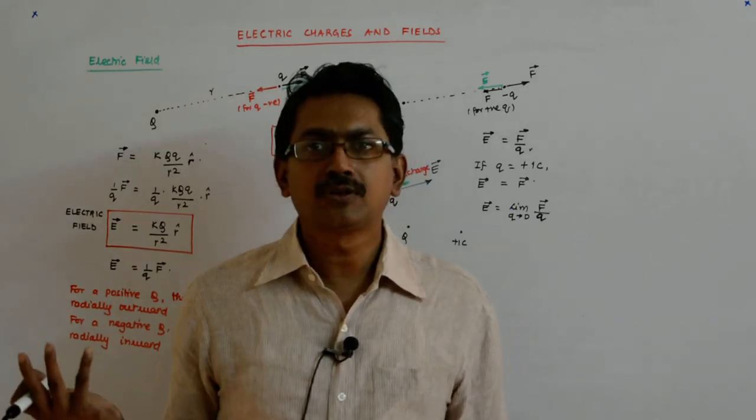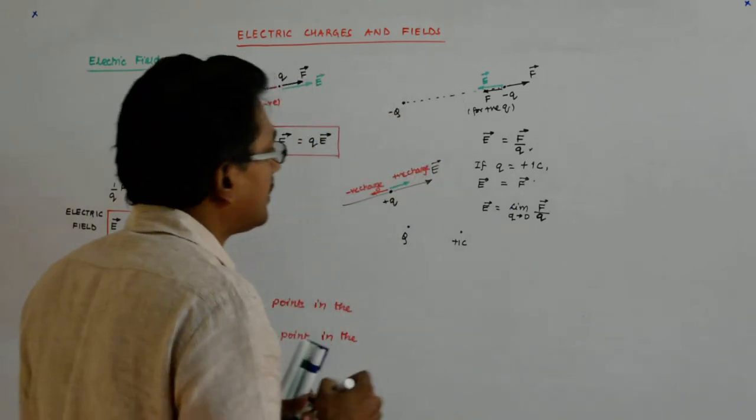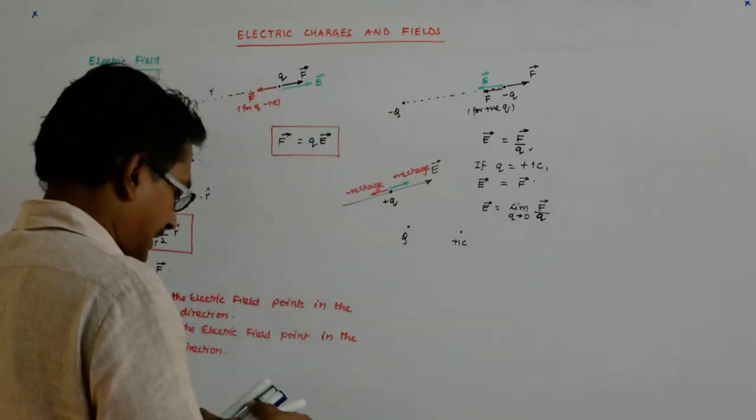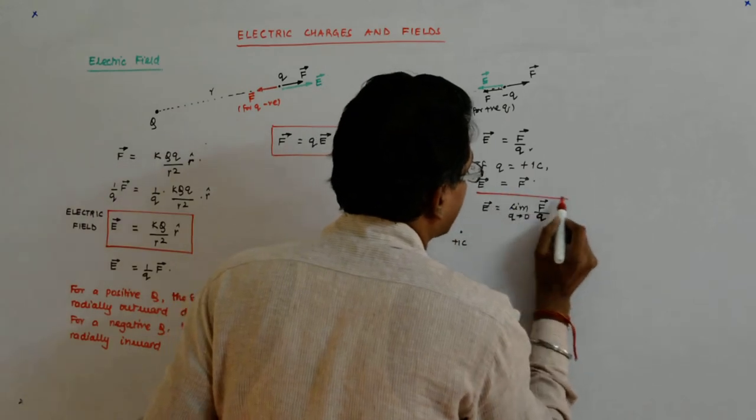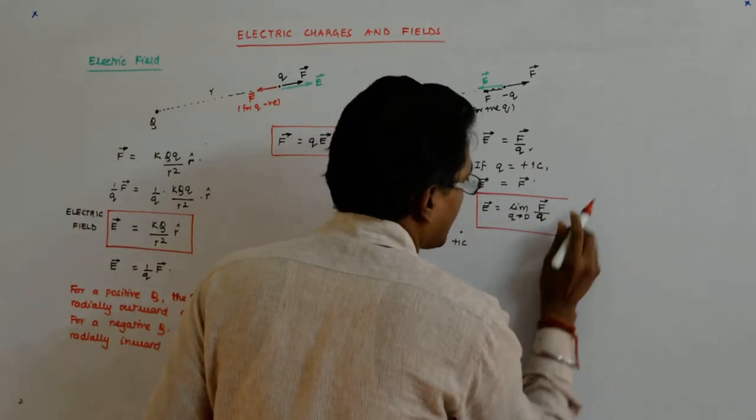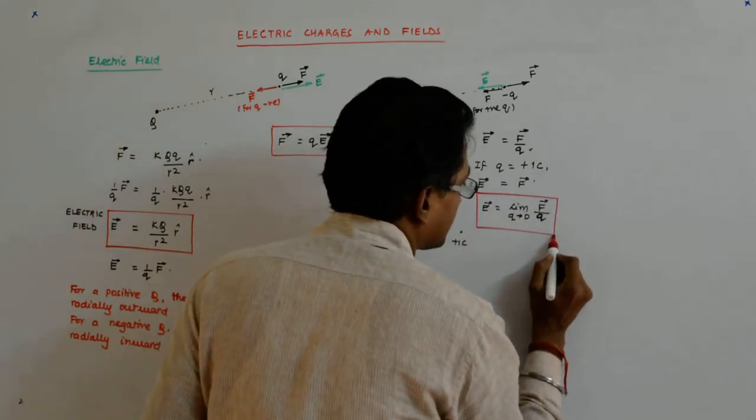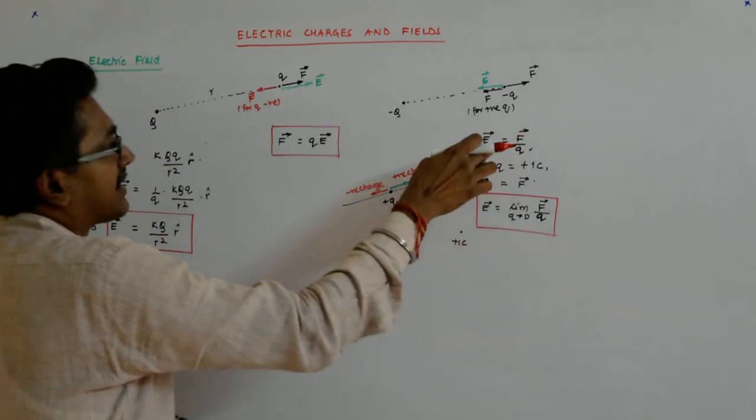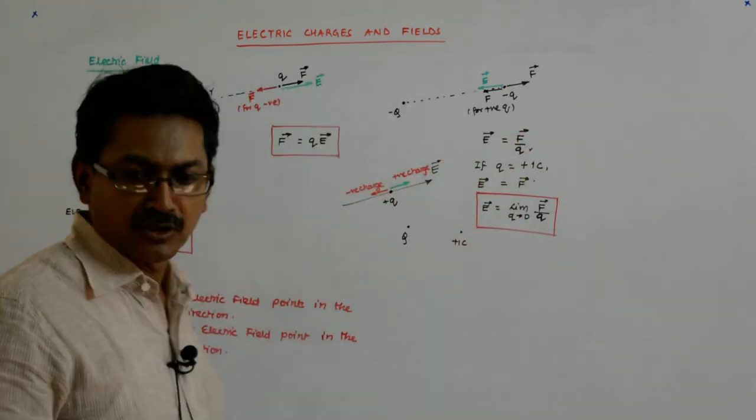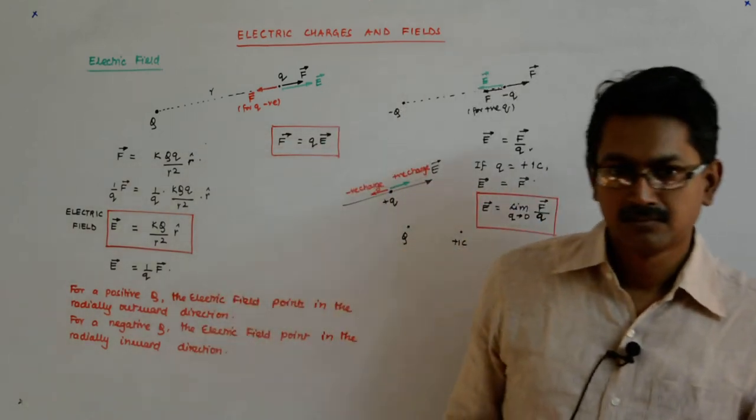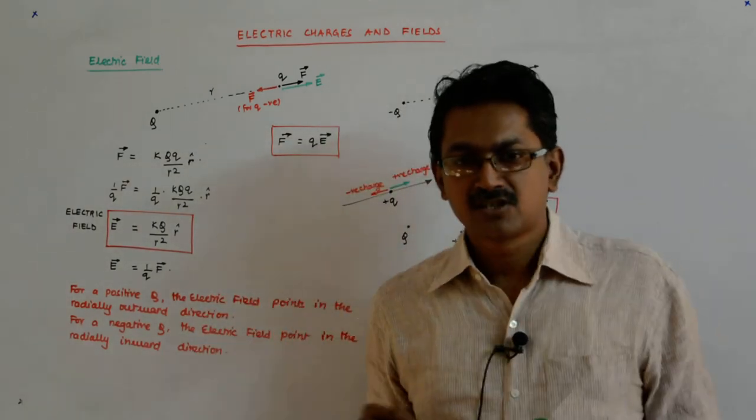So that is not possible, but still we define the electric field as this. And we do not take this route of Q is equal to plus 1 coulomb, but theoretically is saying yes. You keep on putting the charges.